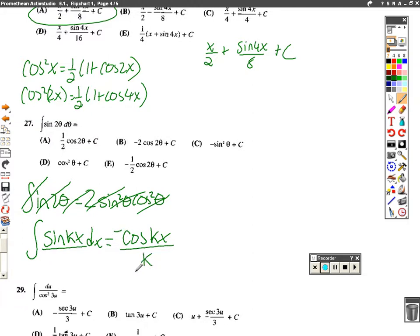Well, if that was true, which it is, this would just be negative the cosine of 2x, or 2 theta, over 2, plus c. And that is the answer right here, e.